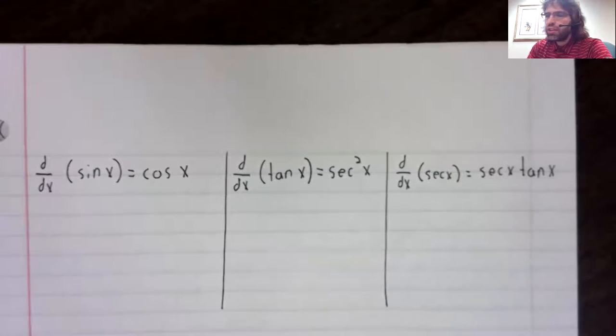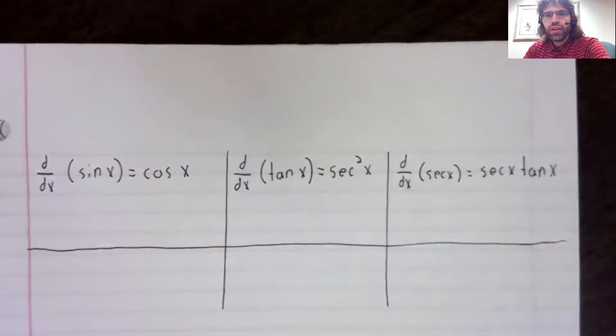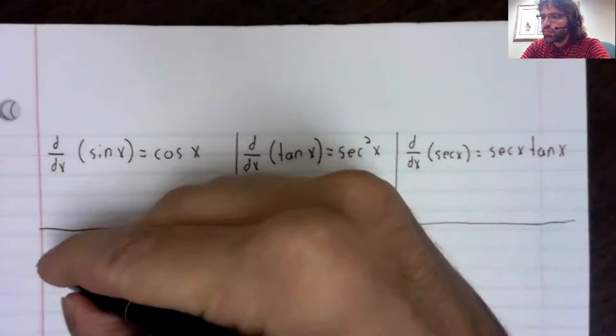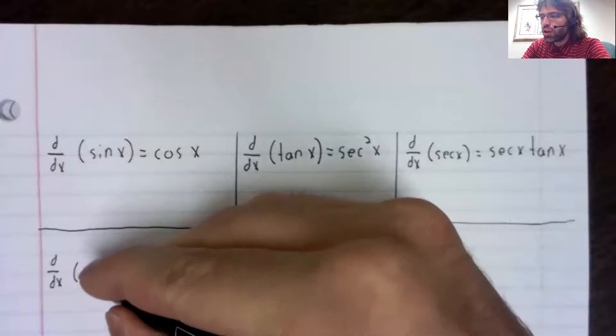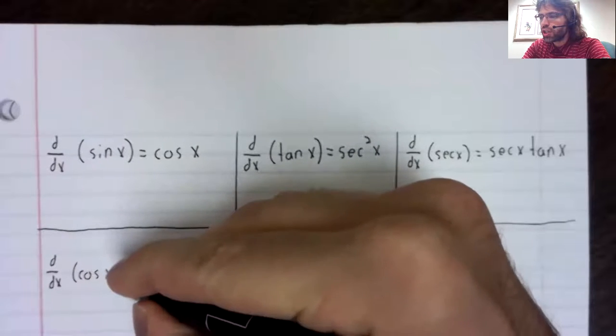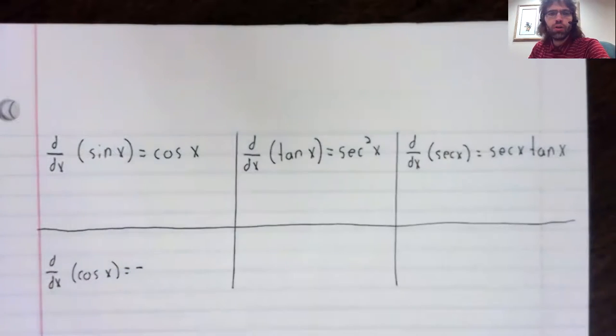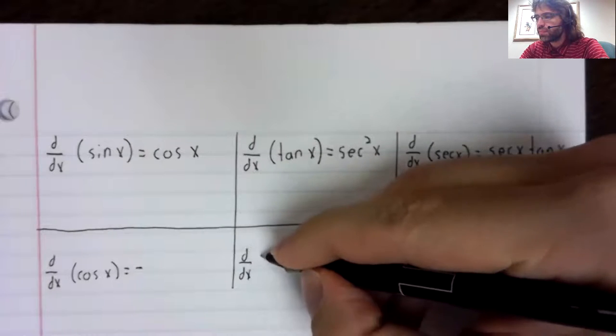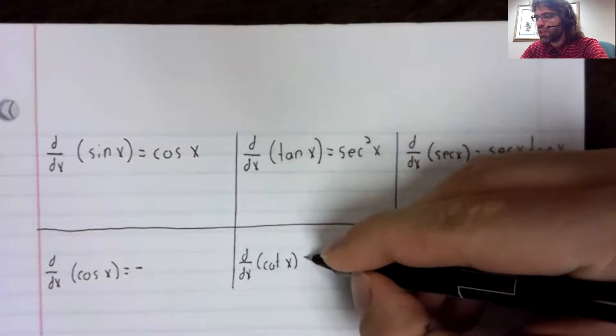The reason I did these in this order is to try to tease out a pattern. The derivatives of the co-functions are all going to have a negative sign in front of them.